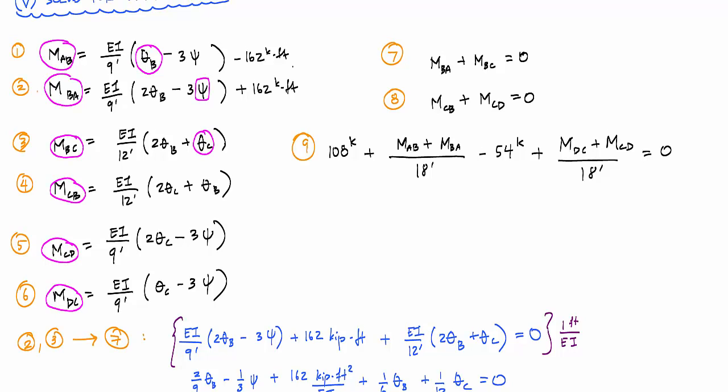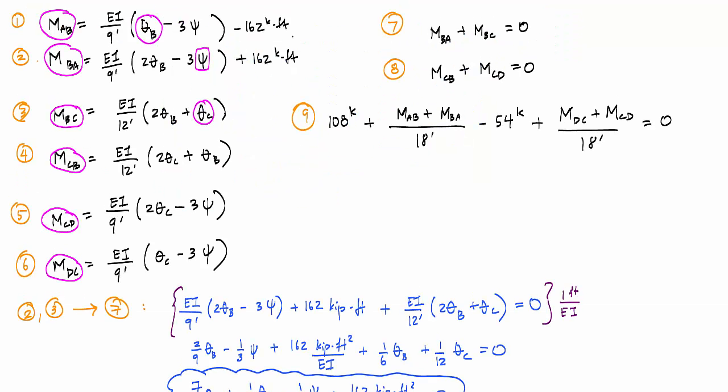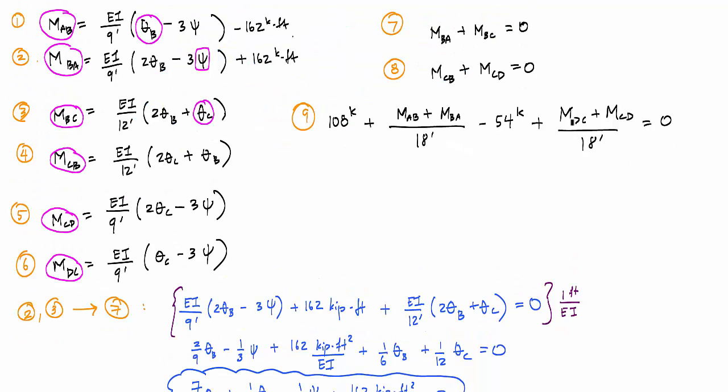And then I'm going to do the same thing with equation eight. I'm going to take equations four and five and substitute into equation eight. And after all the substitution and algebra and things, I'm going to end up with... And the most complicated one might be substituting to this last equilibrium equation here, because I'm going to need one, two, five, and six into this mess right here. Note this equation right here should have really just been 54 kips. And if I multiply through by 18 feet...